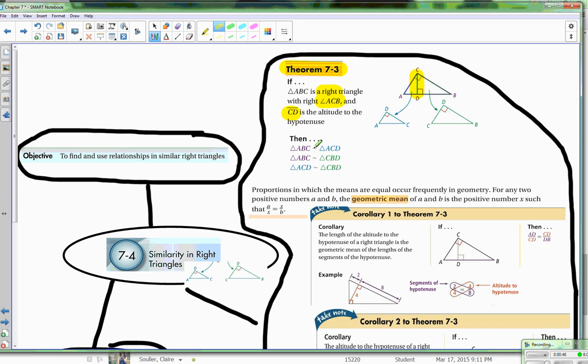Triangle ABC is also similar to triangle CBD, and ACD is similar to CBD.